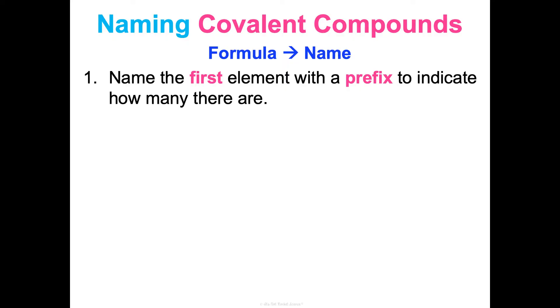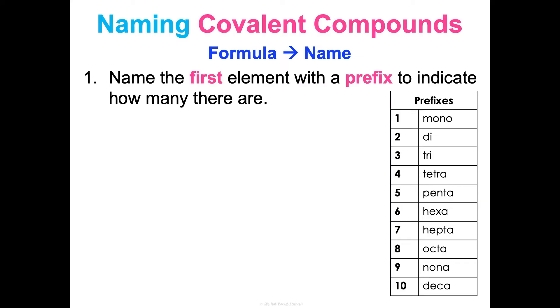So the main thing with covalent is that we're going to use prefixes. So with our first and our second elements, we'll use prefixes. And that's going to tell us what the subscript will be when we're going the other direction. And a prefix is just something like this. Three represents tri. Four represents tetra. Ten represents deca. And I will give you this as a reference. The only exception here is that for the first element, if there's only one of them, we just don't say mono on the first one. I don't know why. You say it on the second, but that's just the rule.